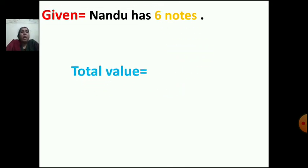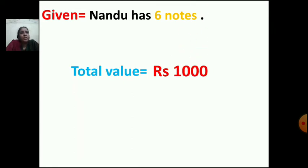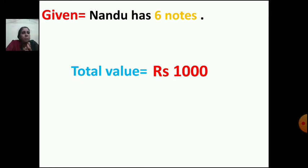Total value of those 6 notes is rupees 1000. Now you have to take 6 notes such that the total makes rupees 1000. The amount of those 6 notes should make 1000 rupees. Let us see which notes Nandu has taken.